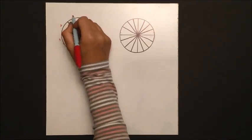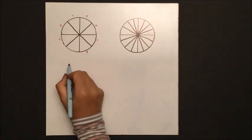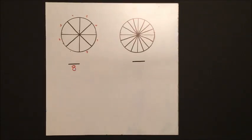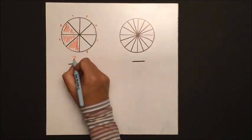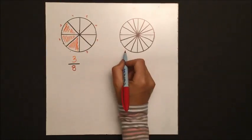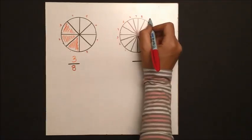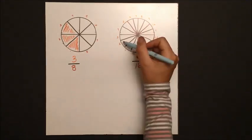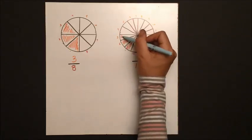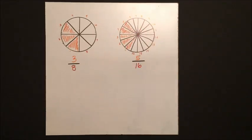So let's try another problem. Let's say we have a pizza with eight possible slices and we are going to have three of them. And our second pizza is going to have 16 possible slices, and we will have five out of the 16 and we want to add these together.